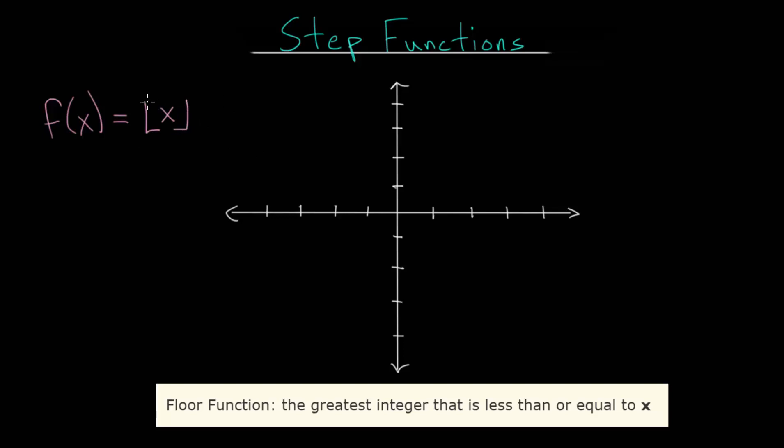And notice that the bracket is on the floor here. And the definition of this function is that the y value is the greatest integer that is less than or equal to x. So let's get an idea of how this works by just making a table. So we have our x values, and then we have our function values, our floor function values.